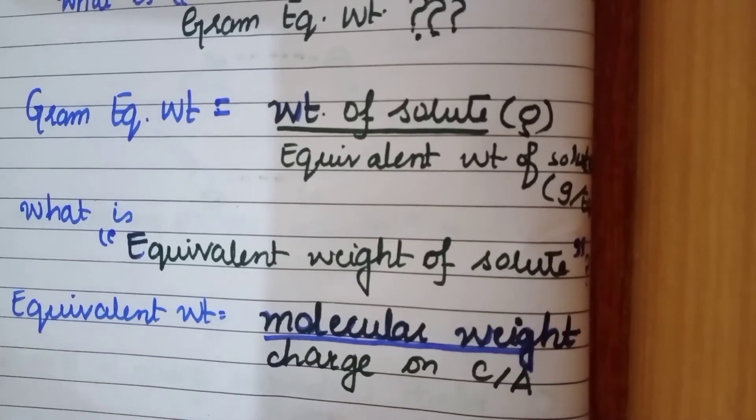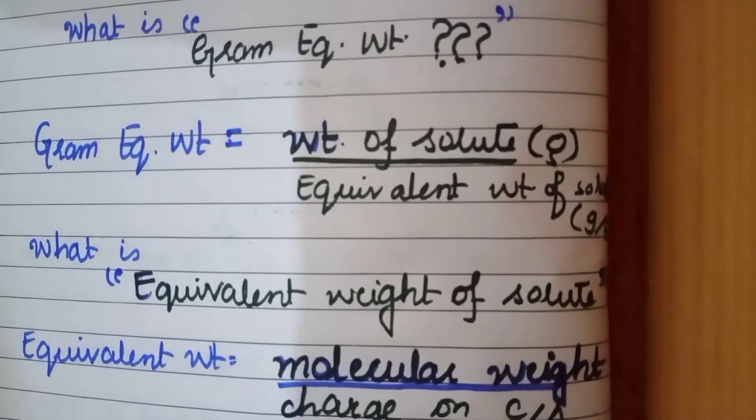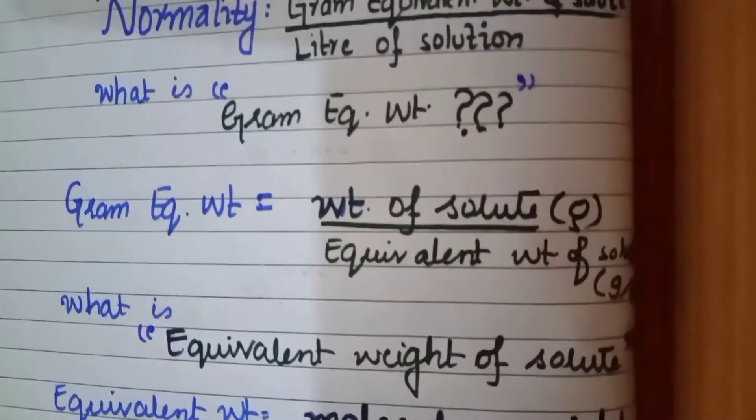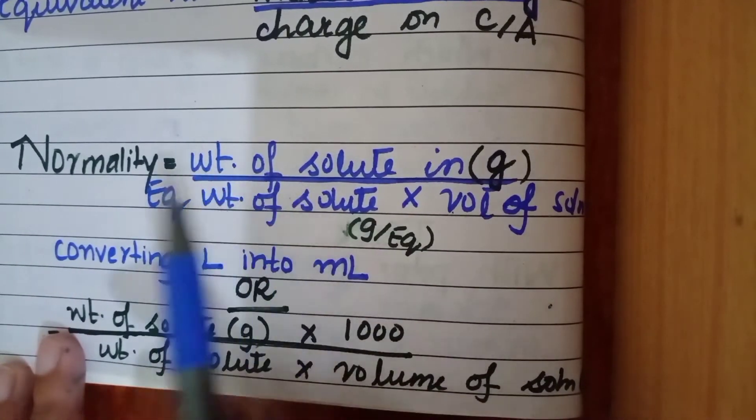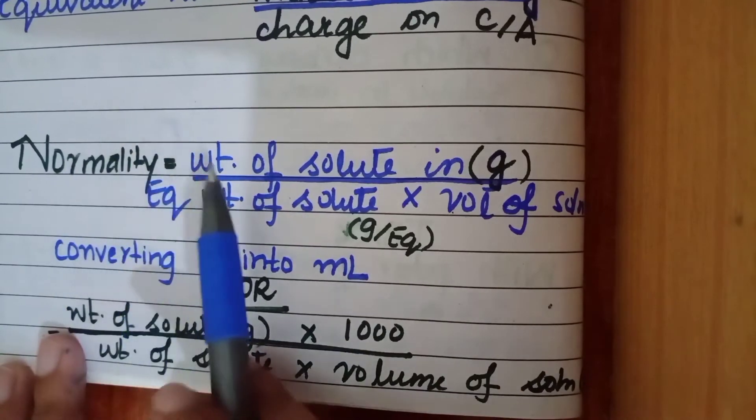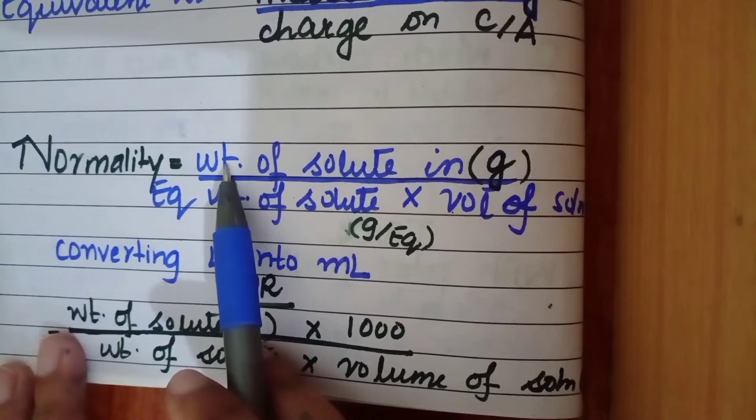So once we have gone through these basic formulas, we are going to dissect the main formula. As we have already explained and dissected the formula of normality, now we are going to write it in a very descriptive form.